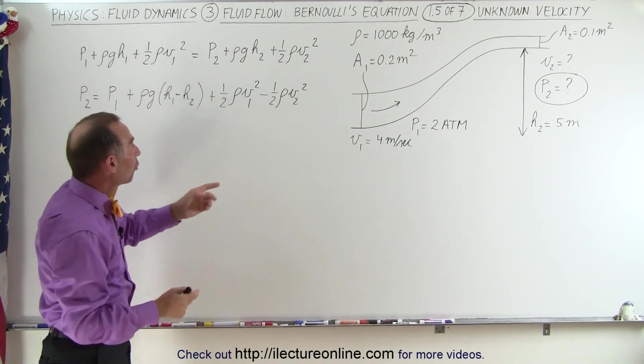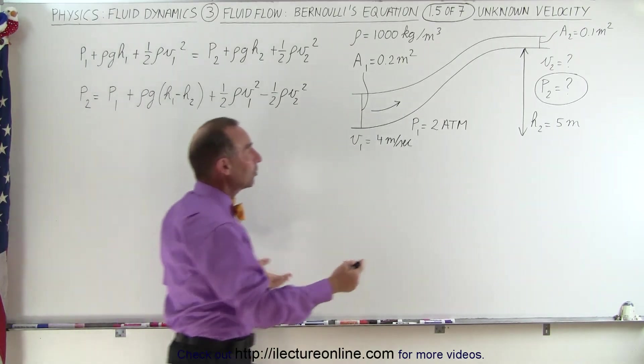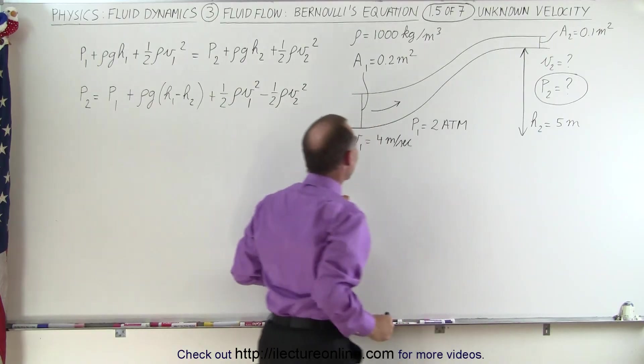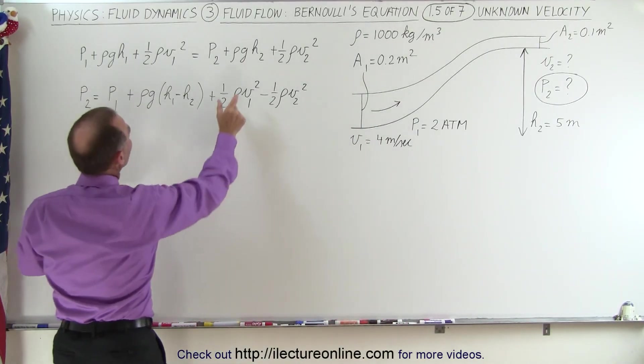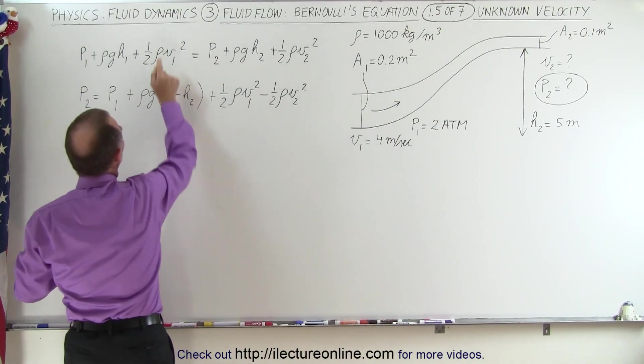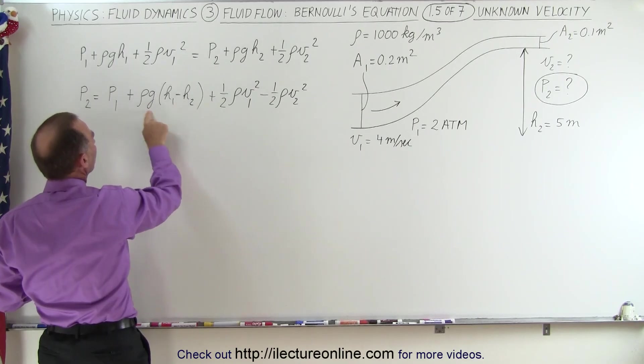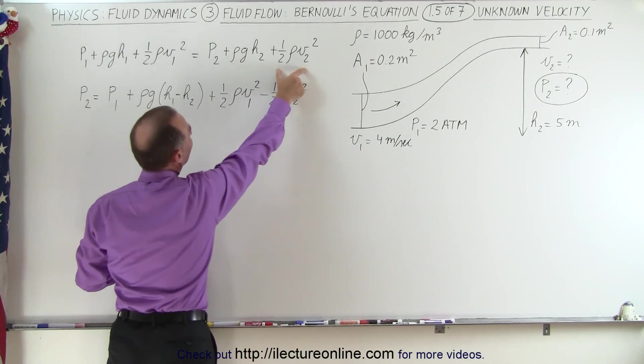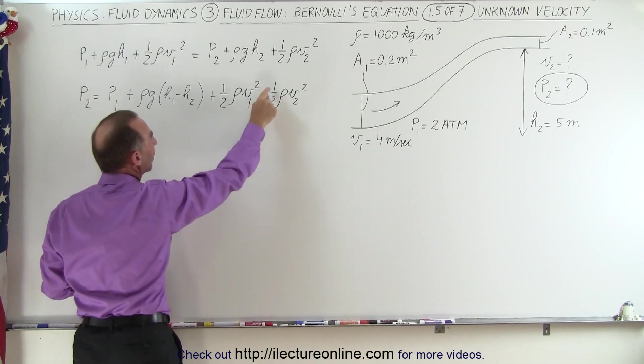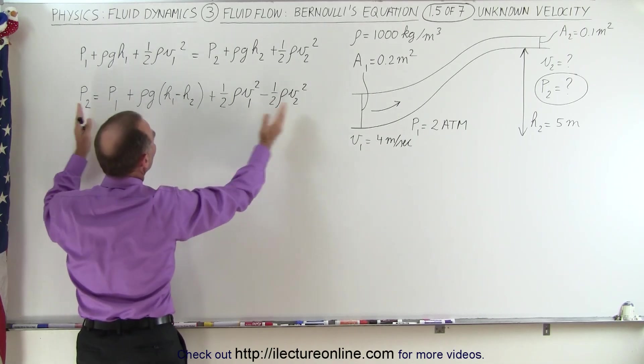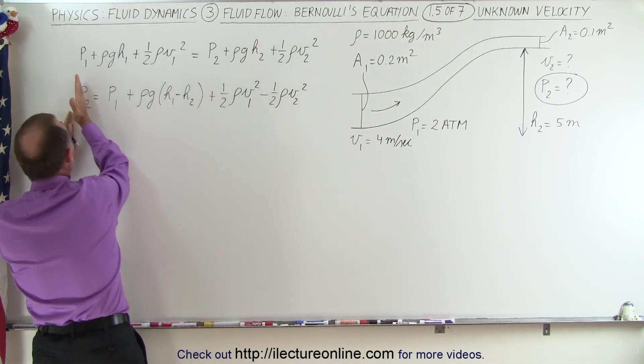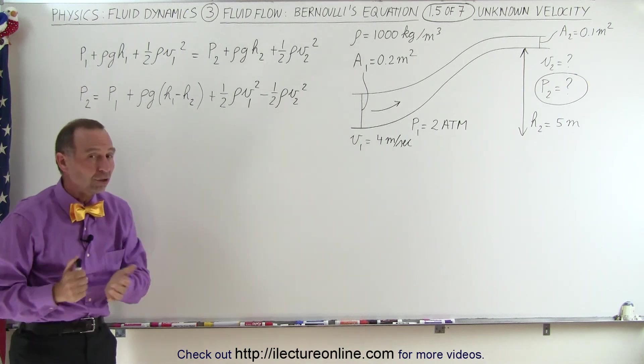So we solve this equation for P2 since that's one of the things we're trying to find out. When we do that, we move rho g h2 to the other side, it becomes minus rho g h2, and we move the one half rho V2 squared to the other side, it becomes minus one half rho V2 squared, and we arrange everything so that we have P2 on the left side of the equation.